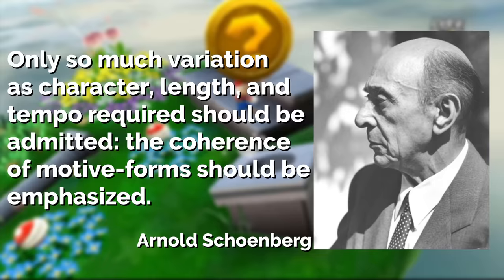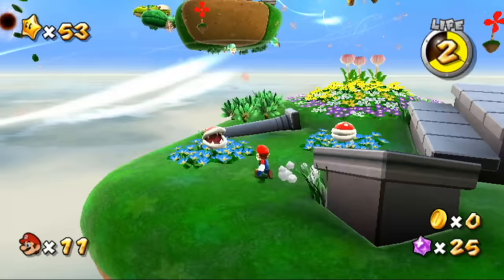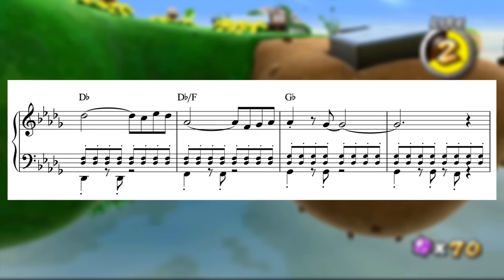The coherence of motive forms should be emphasized. Let's take a look at Gusty Garden's A-section melody from this perspective, analyzing the balance struck between repetition and variation. The first four-bar phrase introduces the two basic melodic ideas that fuel most of the piece, shown specifically in bars 1 and 3.